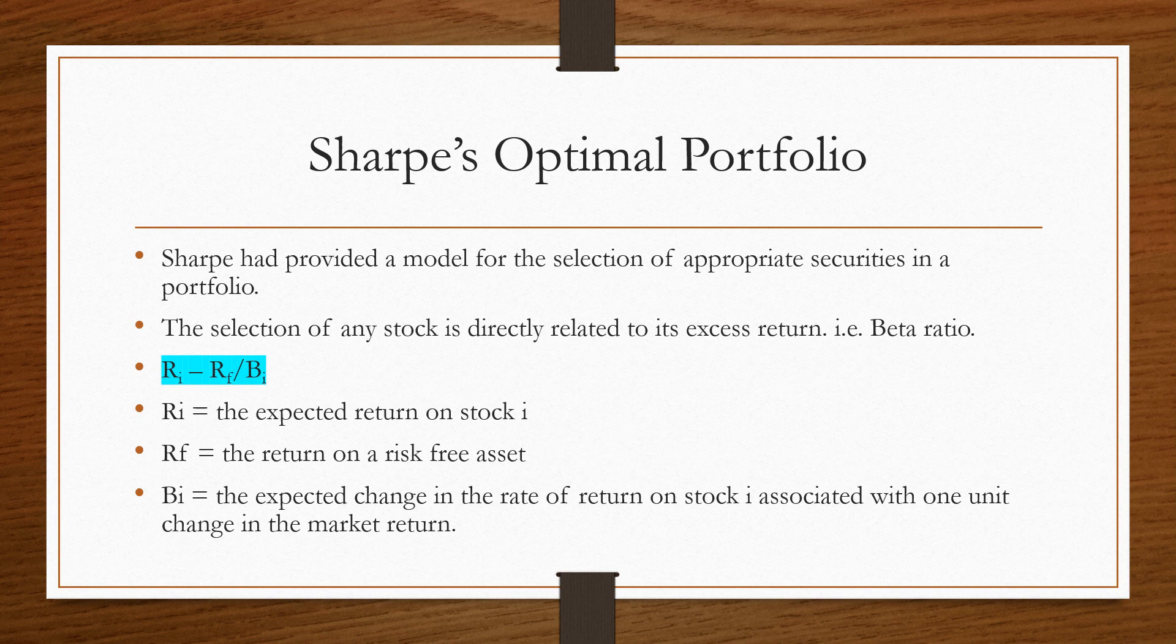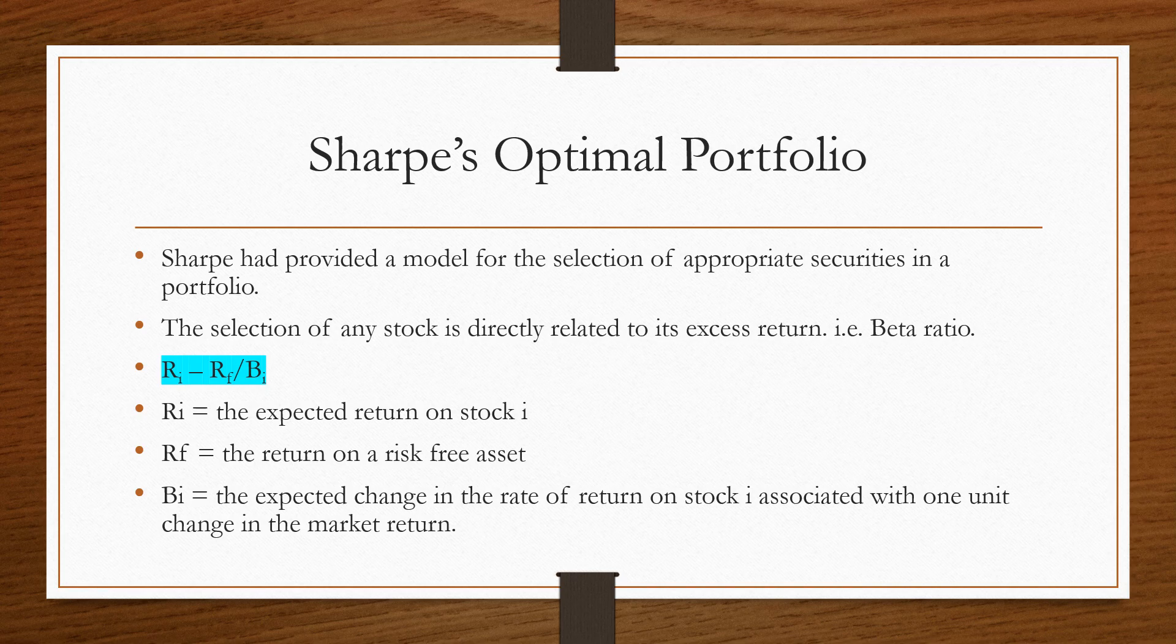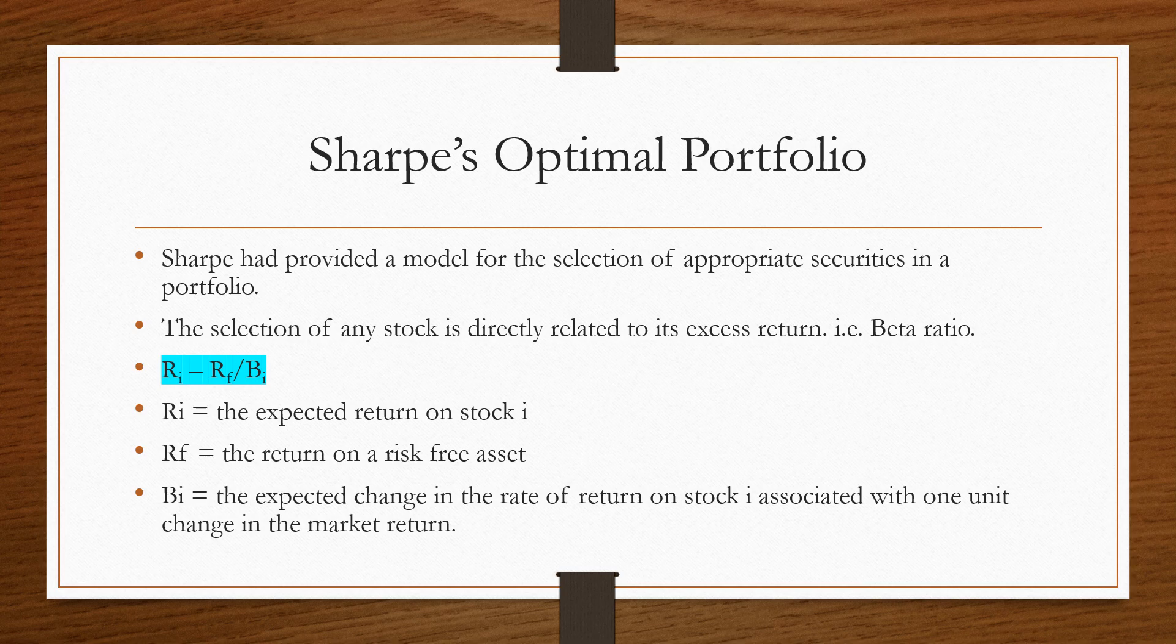Rf is the return on a risk-free asset, and beta i is the expected change in the rate of return on stock i that is associated with one unit change in the market return.